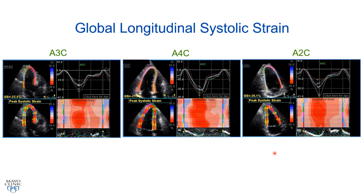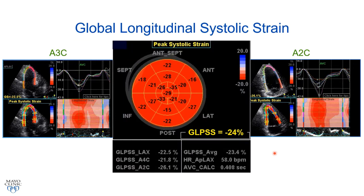To derive global longitudinal strain using speckle tracking, we take the standard grayscale apical three, four, and two chamber views. Each view is arbitrarily broken up into six segments, and the percent regional shortening or strain is derived. Results are displayed in a parametric bullseye map — for example, the basal anterior segment may shorten by 16% (strain minus 16%), the mid inferior wall by 27% (strain minus 27%). When we average all segments, we derive global longitudinal peak systolic strain.